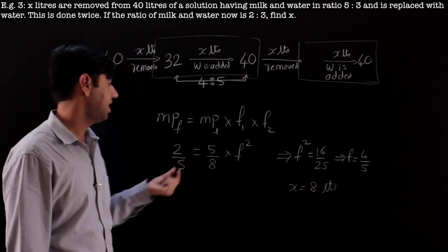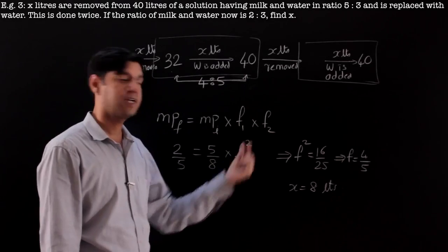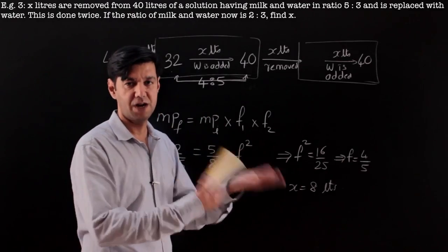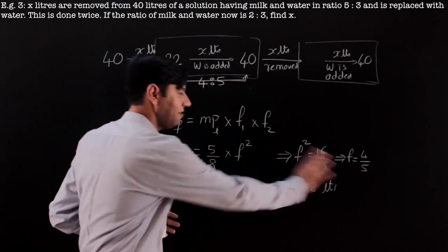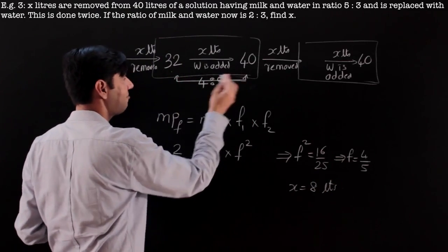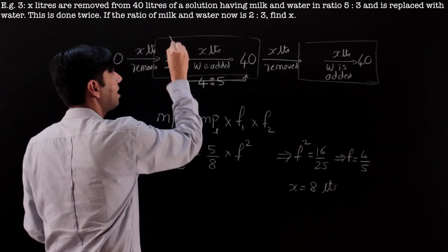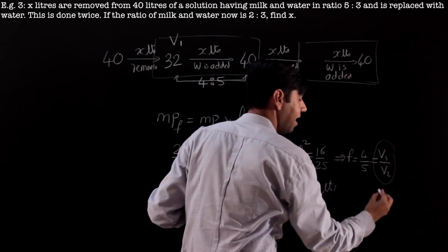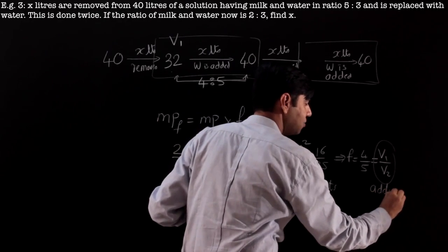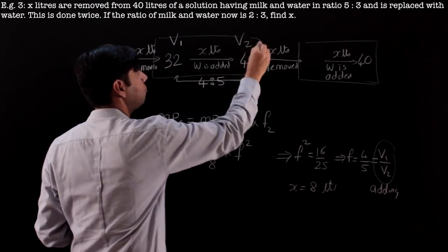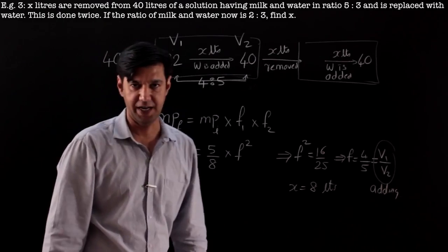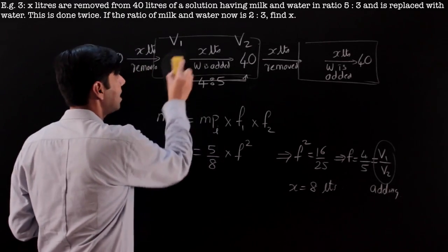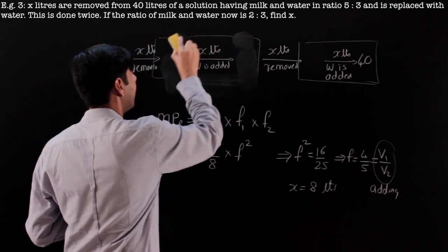This is a different sense: until now fractions and multiplying factors were given and we needed to find the final proportion. This time the final proportion is given and we need to find the volume removed and added. So we find the factor and know that factor has to be v1:v2. While adding, v1:v2 has to be 4:5. If you still find it difficult without getting x explicitly, my suggestion is to go ahead and introduce x.